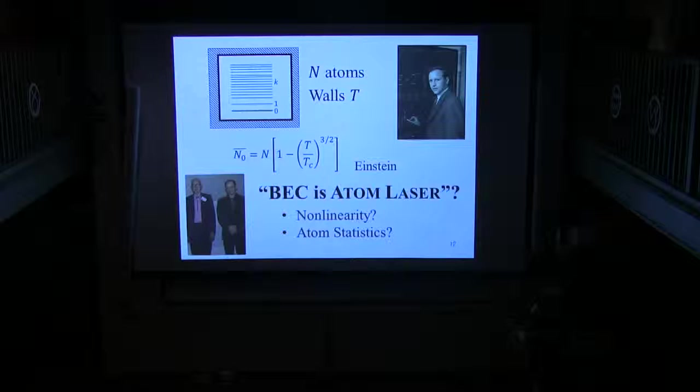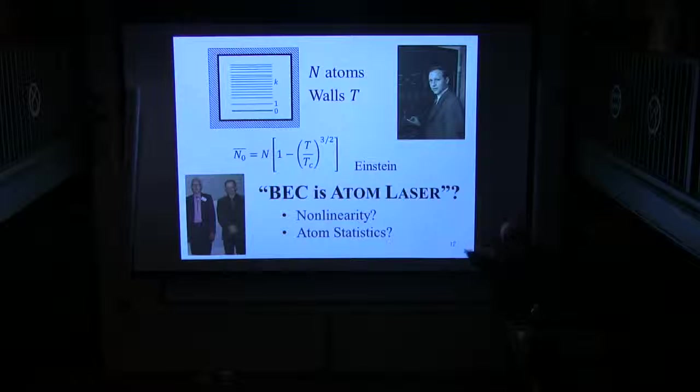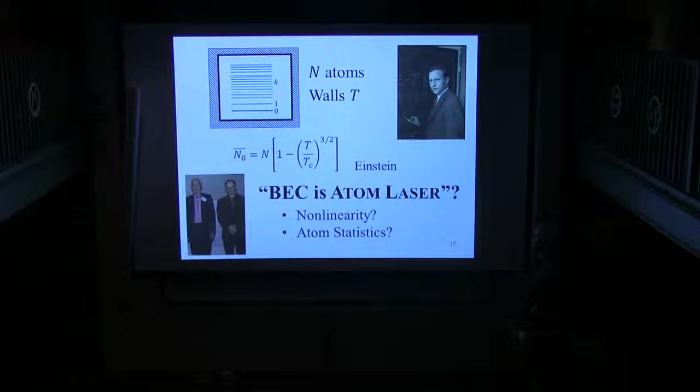So this is the famous Einstein result, which he obtained using the grand canonical ensemble and setting the chemical potential equal to zero, which you really shouldn't do. But he being the genius that he is, it gets essentially the right answer. And now you'll find later in the sense of months after the experiments, people had the insight, the notion, the wrong-mindedness, the correct deep insight – all these things are true – that the BEC is like an atom laser.